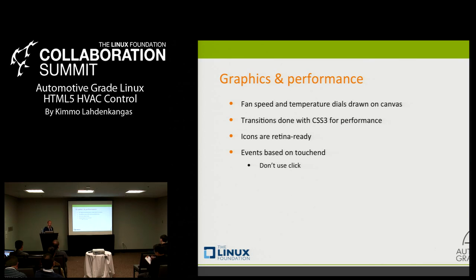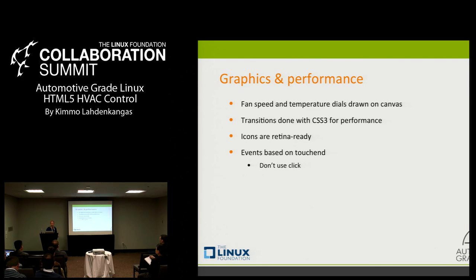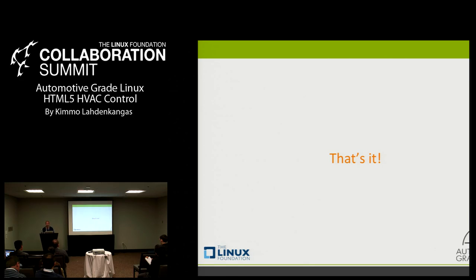Regarding graphics and performance: we draw basically all graphics on Canvas so it scales. Transitions are done in CSS3 because that's the best way to get performance — it's hardware accelerated. There are a couple of icon images, and they're written as SVG so they look good on high-definition screens too. One quick end note: when interfacing with touch devices, don't use click events because that introduces extra lag to the UI. Any questions on the UI side of things?